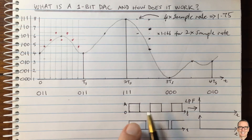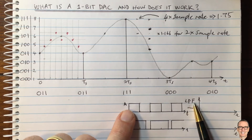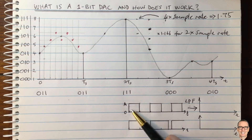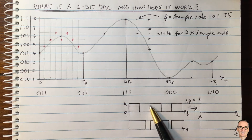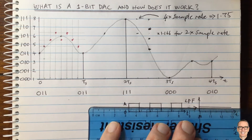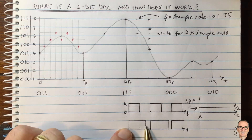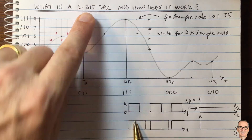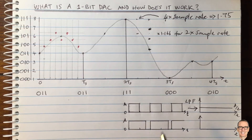If we low-pass filter that waveform, we smooth it out and take the average. The average of a signal spending equal time at A and 0 is A/2 for all time. By changing the amount of time spent in the 1 state versus the 0 state — pulse width modulation — you change the voltage level after the low-pass filter. Spending more time in the A state gives an output closer to A. This is what's happening inside the one-bit DAC's digital-to-analog circuit.